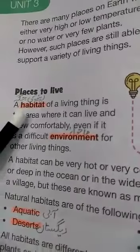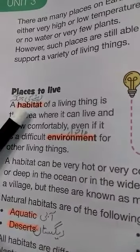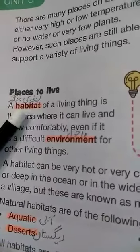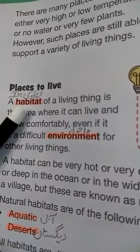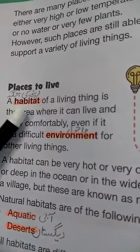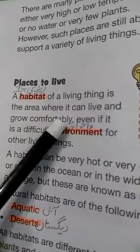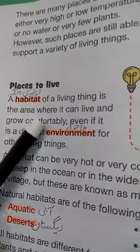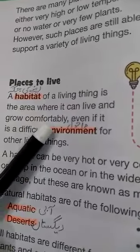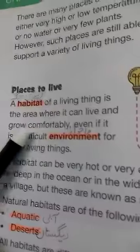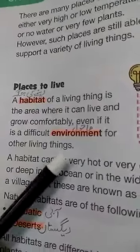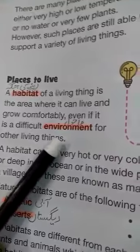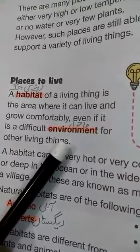Next is habitat. The habitat of a living thing is the area where it can live and grow comfortably, even if it is a difficult environment. Environment means students: mahol — it is a habitat.